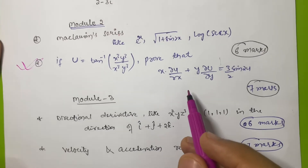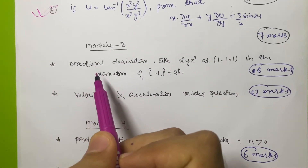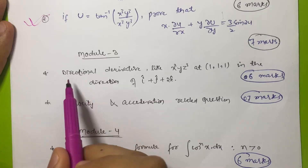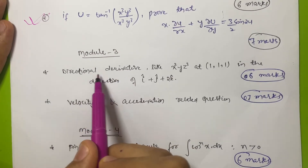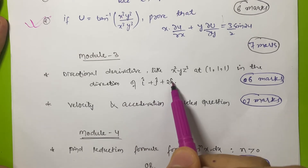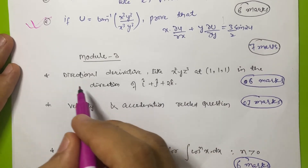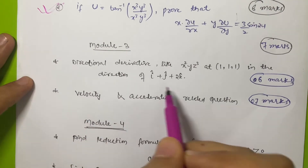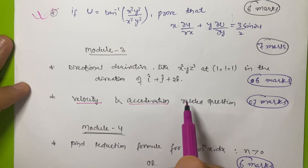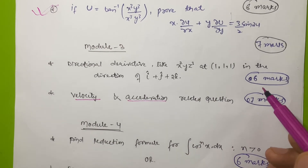In Module 3 you have to play with vectors, which you already know from pre-university. The first topic is directional derivative - for example, find the directional derivative of x²yz³ at given points in the direction of î + ĵ + 2k̂. This carries 6 marks and is a very simple topic. Another topic in this module involves velocity and acceleration-related questions, which can get you 7 marks, so you can easily carry 13 marks from Module 3.